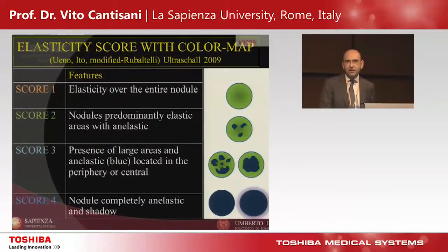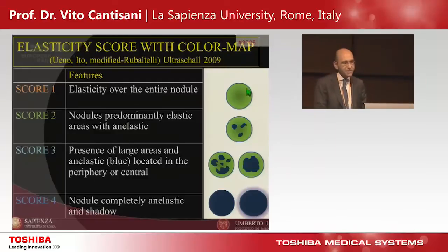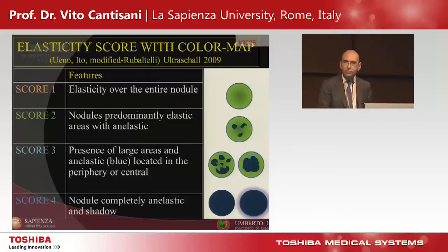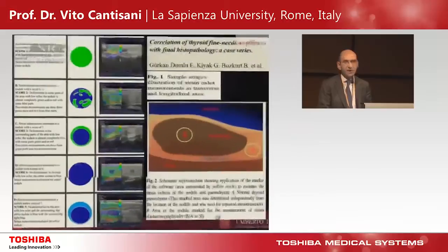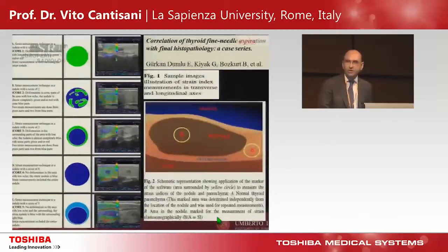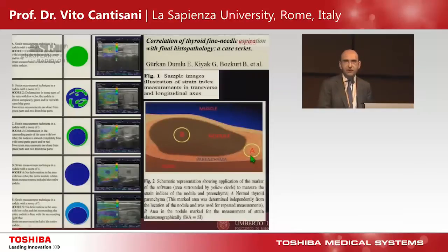Based on that, we may provide a classification called the color-based classification. Nodules can be divided depending on how they are colored: green means soft, blue means hard, depending on the equipment you are using. We also included a semi-quantitative index called the strain ratio — we place a ROI within the nodule and another at the same level of surrounding thyroid tissue to obtain a semi-quantitative evaluation.